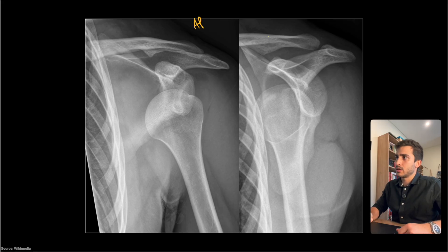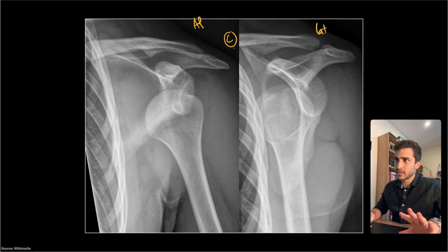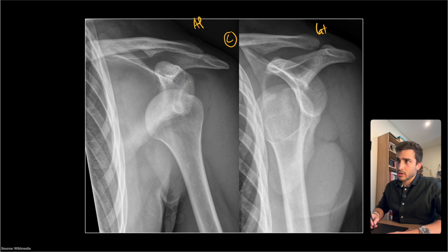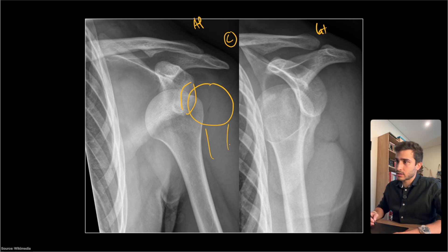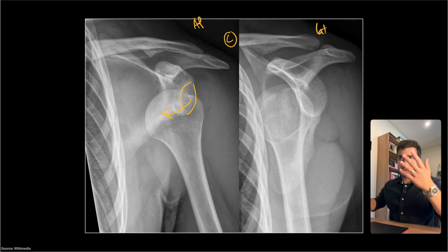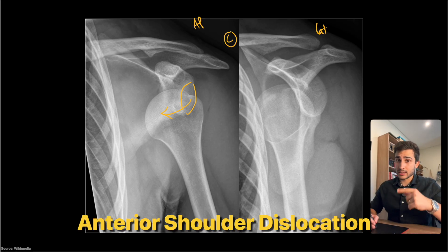Case four — we have an AP and a lateral of the left shoulder. Just focusing on the AP, the humeral head looks like a Q. You can also easily see that it's dislodged from the glenoid fossa — the humeral head ideally should be seated there, but it's migrated away. This location looks like an externally rotated shoulder; with abduction and external rotation, it looks like it's been pushed forward. So it's an anterior shoulder dislocation.